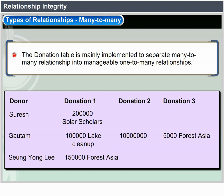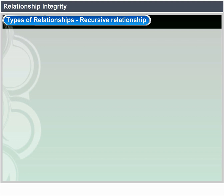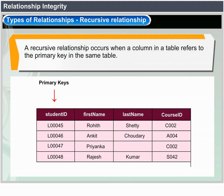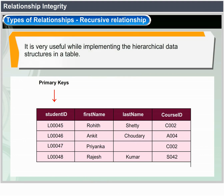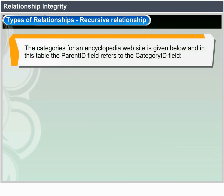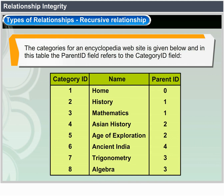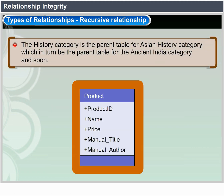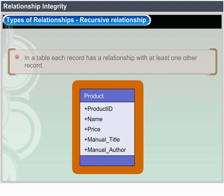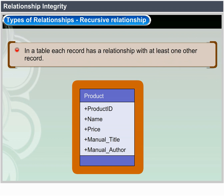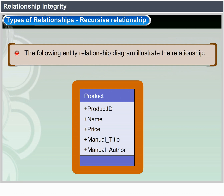A recursive relationship occurs when a column in a table refers to the primary key in the same table. This is useful for describing hierarchical data structures. For example, in a table of categories for an encyclopedia website, the parent ID field refers to the category ID field — the history category parents the Asian history category, which in turn parents the ancient India category. Each record has a relationship with at least one other record in the same table.